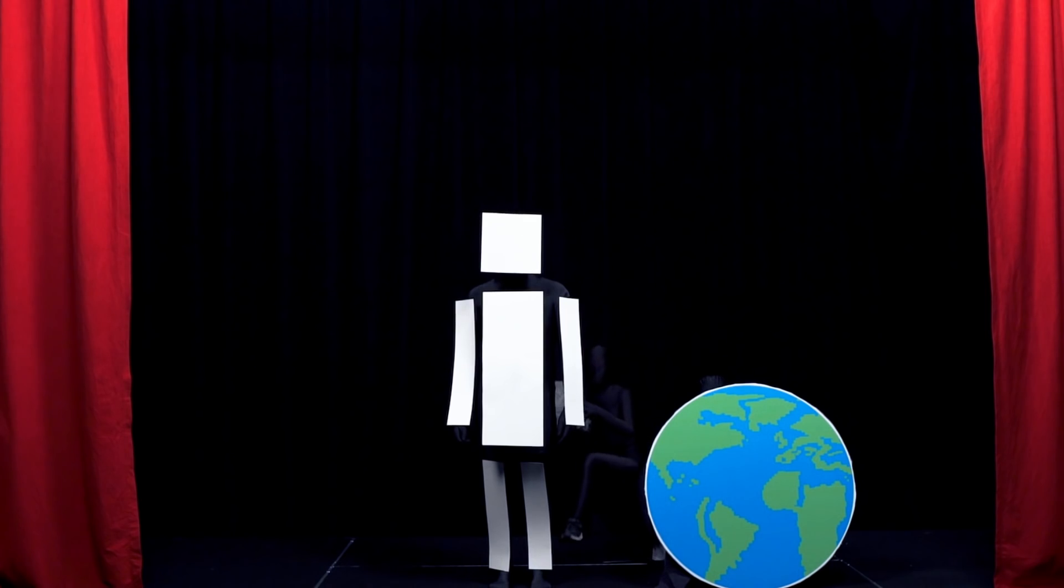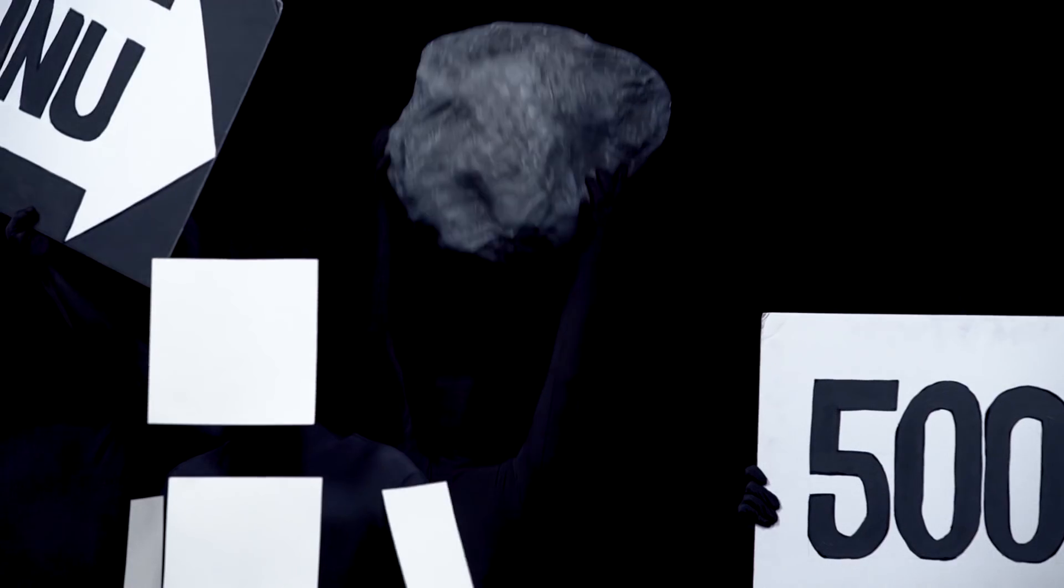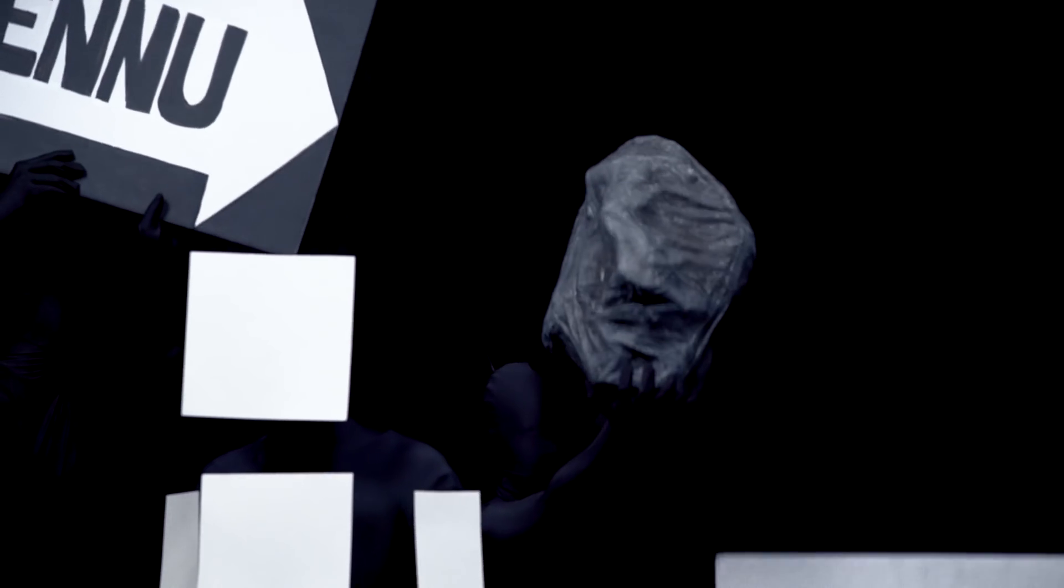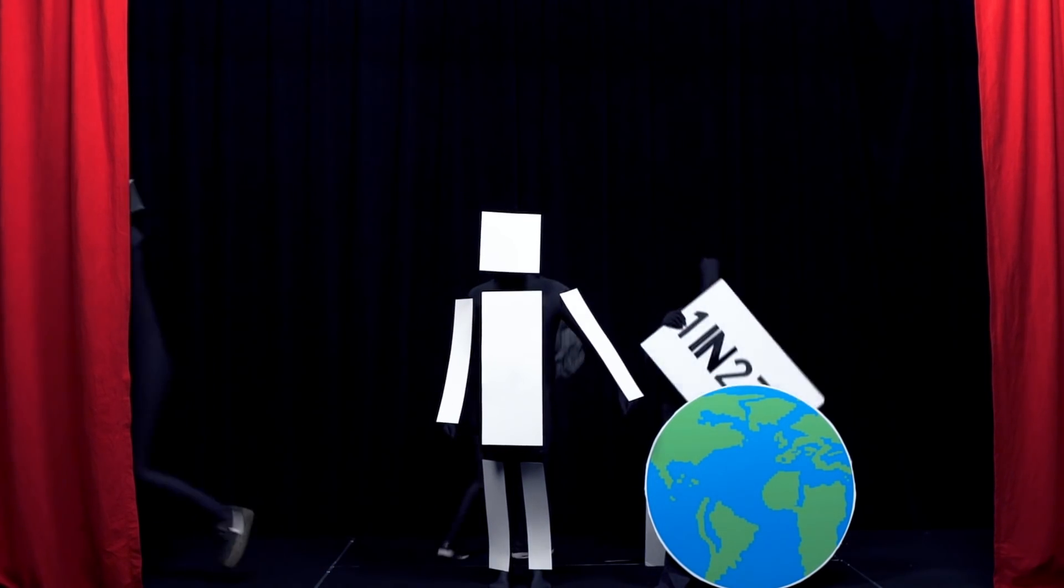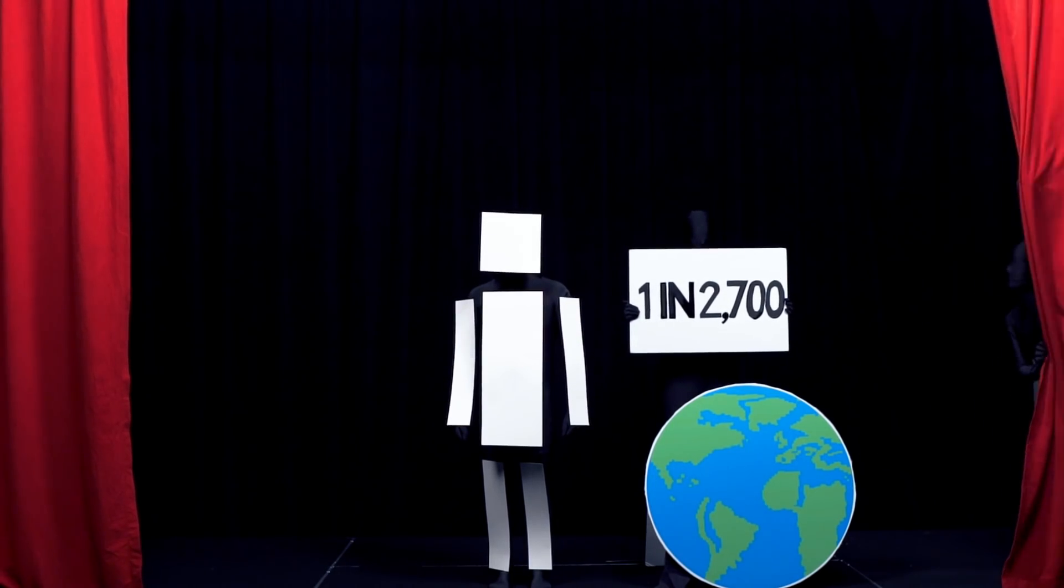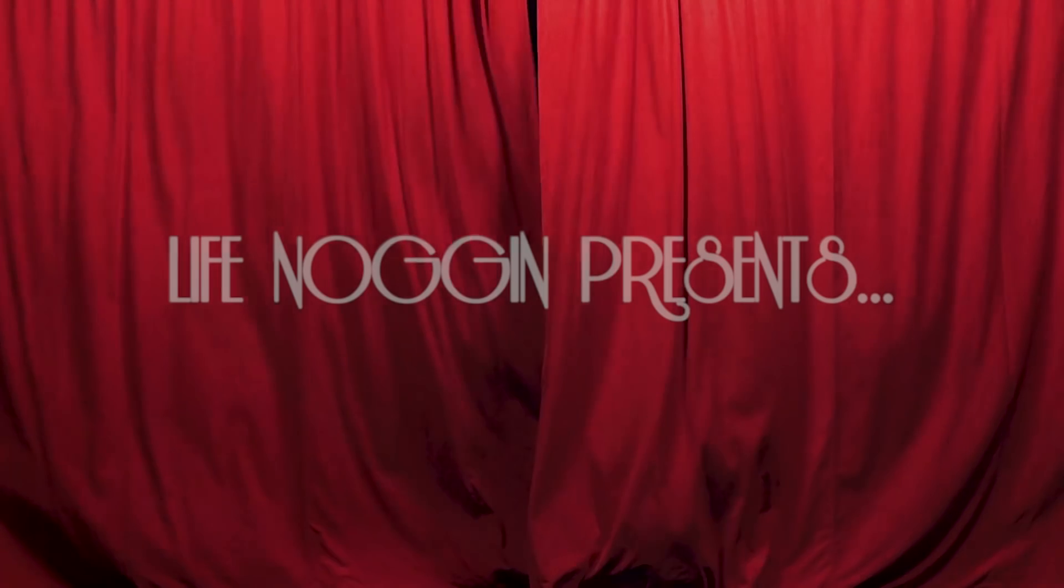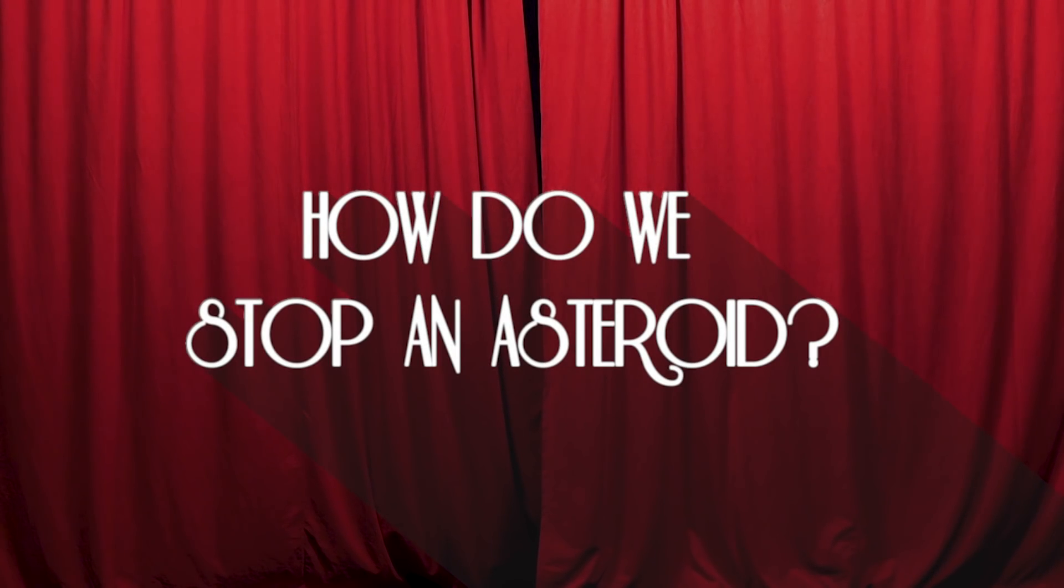There's actually a chance that an asteroid called Bennu, that's about 500 meters in diameter, will strike Earth in about 200 years. Which is pretty soon when you think about it. Sure, it's only a 1 in 2,700 chance, but scientists are beginning to prepare for the worst.